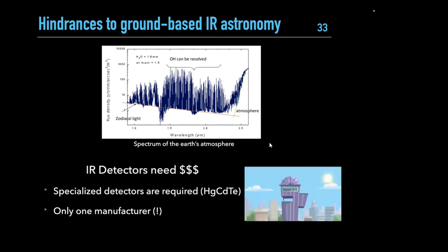The other major problem is that infrared detectors are much more expensive than optical CCDs. Silicon-based CCDs cannot detect infrared light because the photon wavelength exceeds the silicon band gap. You need special detectors — traditionally an alloy of mercury, cadmium, and telluride, called HgCdTe or MCT detectors. These are hard to manufacture and characterize, and there's essentially only one manufacturer, so costs are inflated by this monopoly.